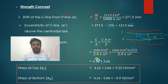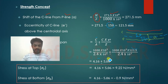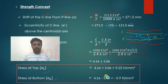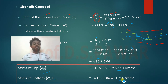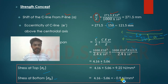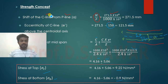After substituting the eccentricity of 121.5 mm into the strength concept formula, the direct stress is 4.16 N/mm² and the eccentricity stress is 5.06 N/mm². The stresses at the top and bottom fibers are again 9.22 N/mm² and -0.9 N/mm², confirming the same results as the stress concept.